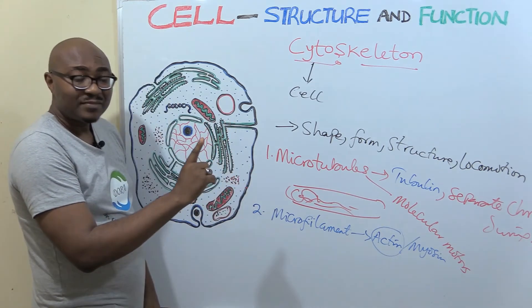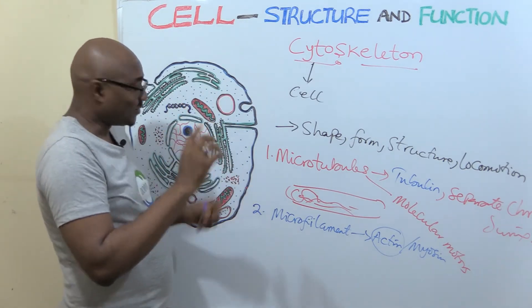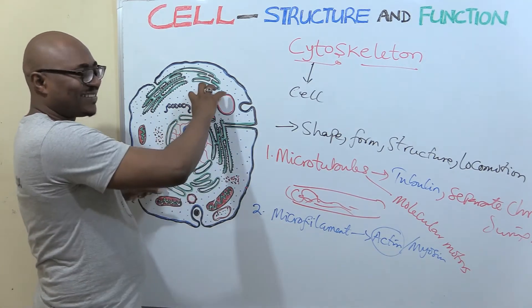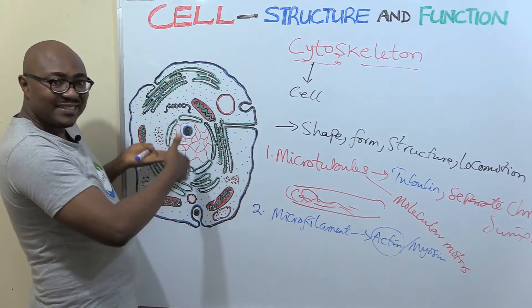Another thing actin does is that when doing cell mitosis, you know mitosis, there are different stages. You said microtubules, they are only to separate the chromosome. Actin's role is to divide the cell.